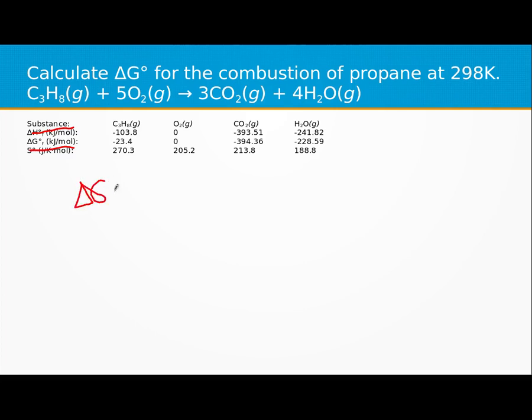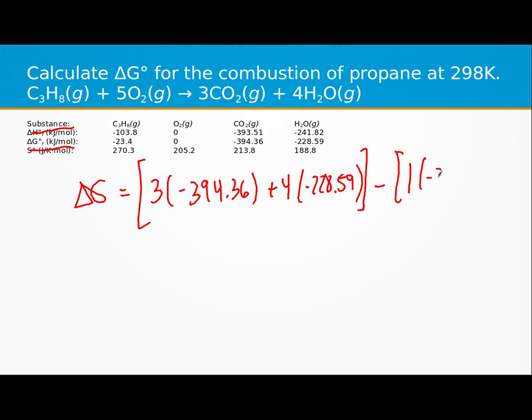So we have our products. We have three carbon dioxides and we have four water products, and our reactants. We just have to worry about the negative 23.4 because the oxygen has a delta G of zero.